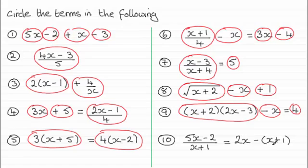And finally, with question 10, in this equation, you've got one term on this fraction, on the left hand side of the equals, on the right hand side of the equals, you've got two terms, the 2x, or you could think of it as plus 2x. And you've got this second term, all of minus x plus 1.